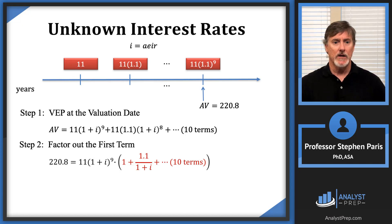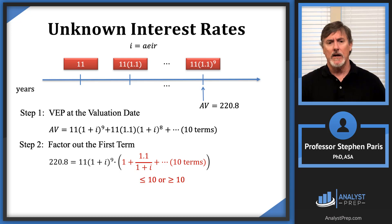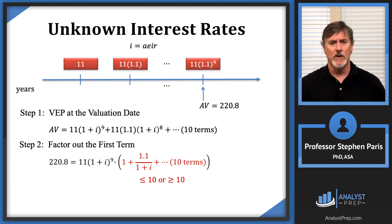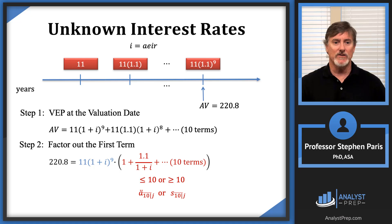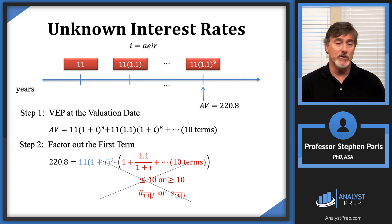Now I again want to know if 1.1/(1+i) is bigger or less than 1, but I still don't know i. This time, though, the factor out front is 11 times (1+i) to the ninth — an unknown expression — so I have both an unknown factor out front and an unknown common ratio. I simply cannot get anywhere with this approach; it's not solvable when you start from the first payment.